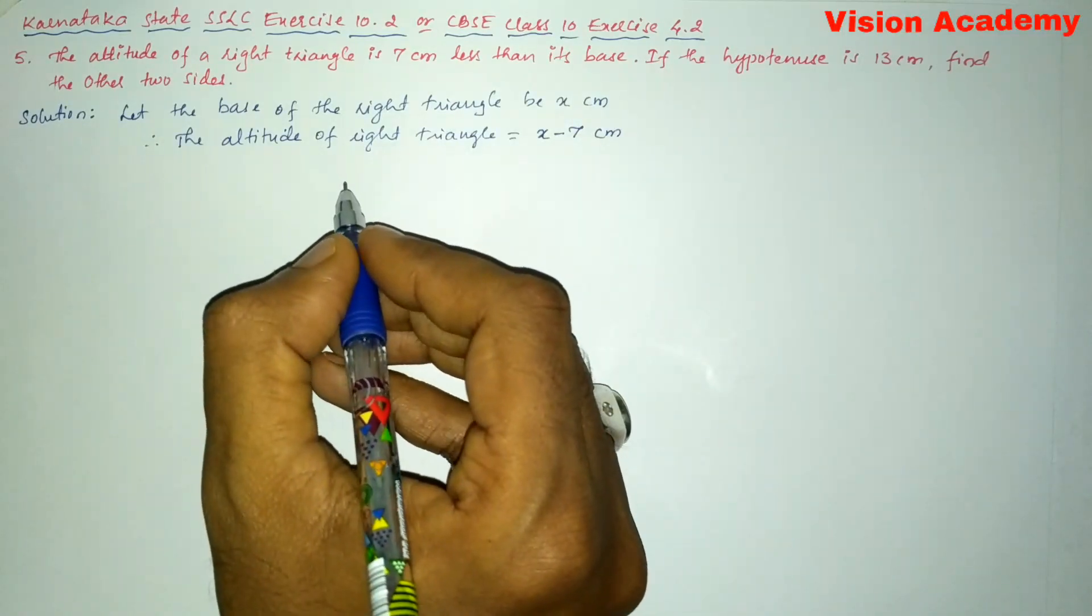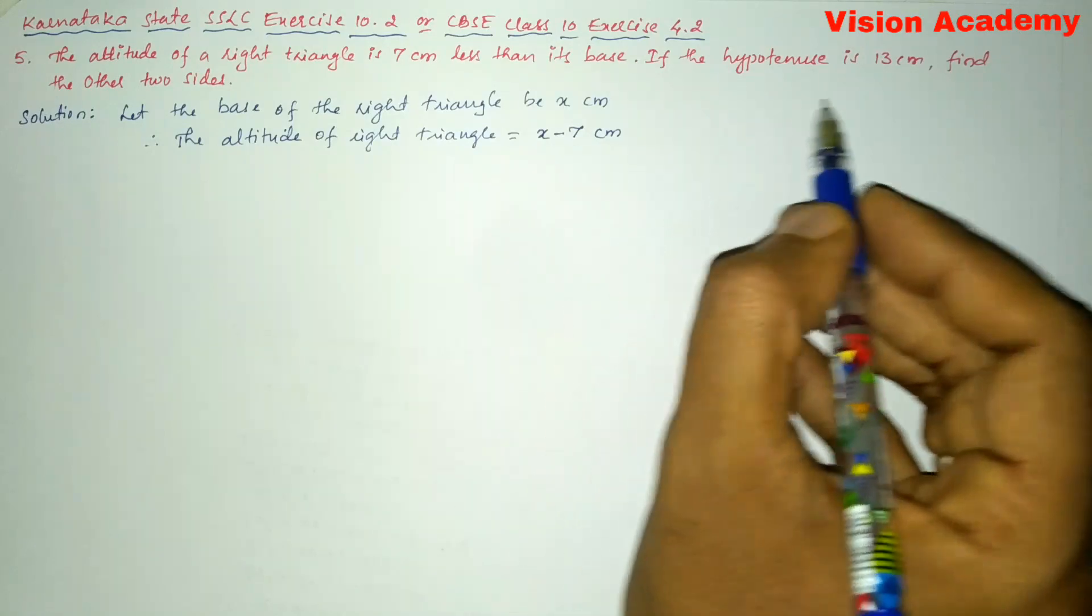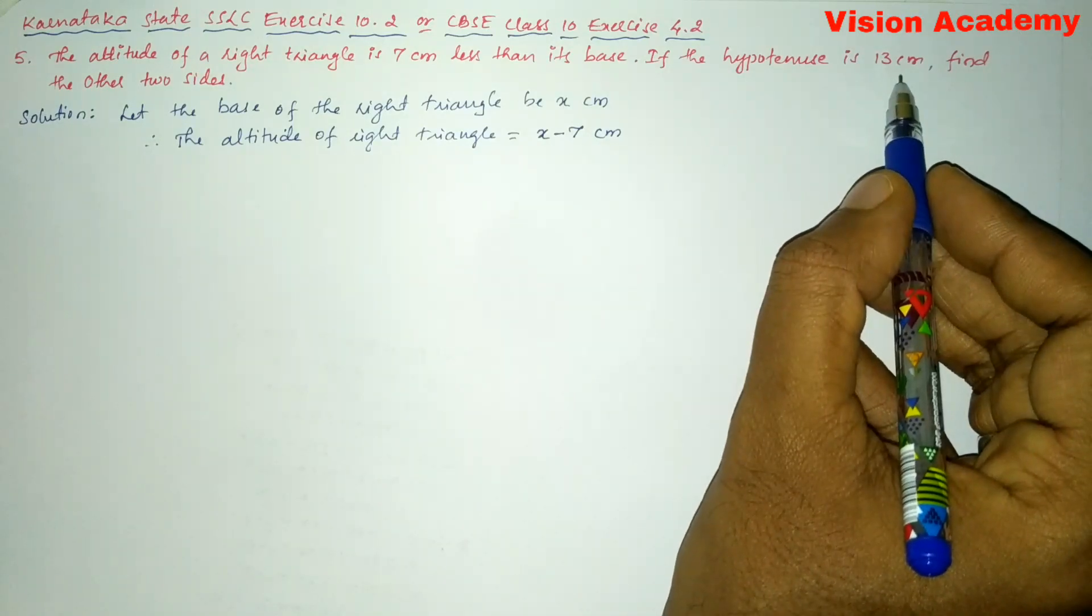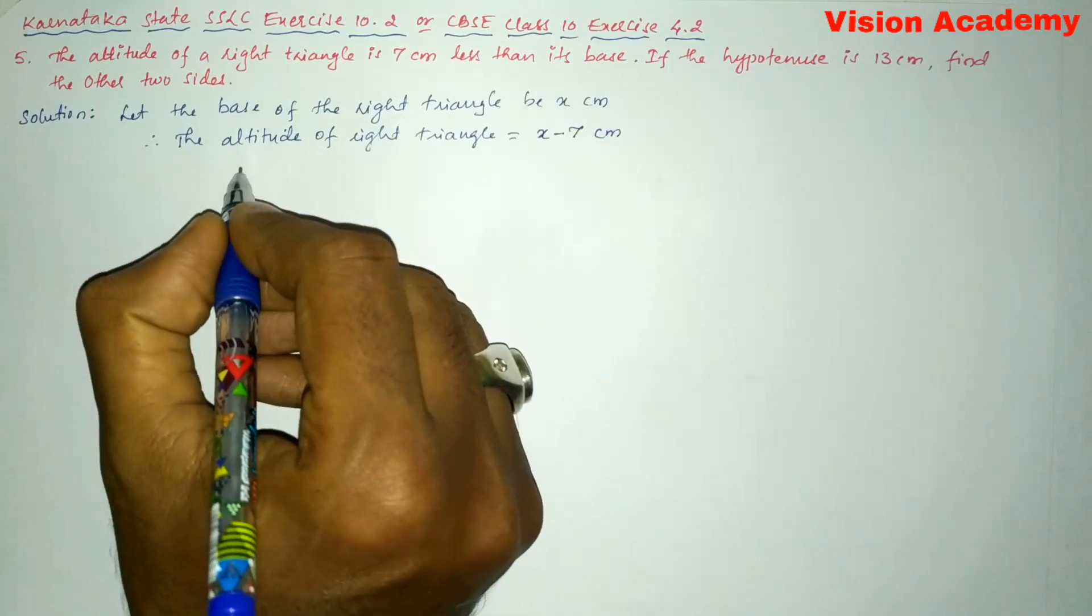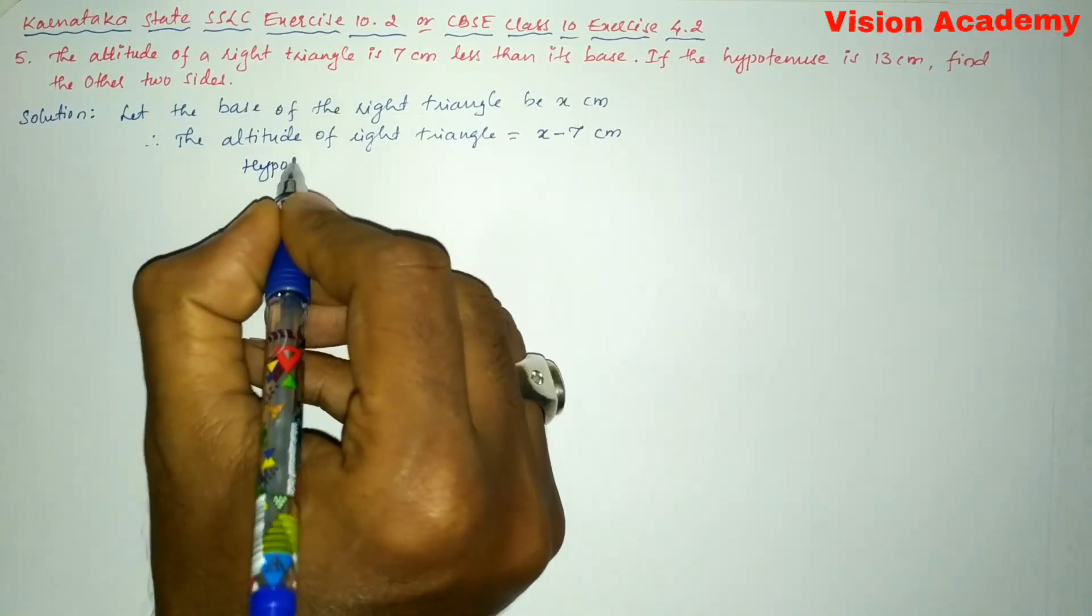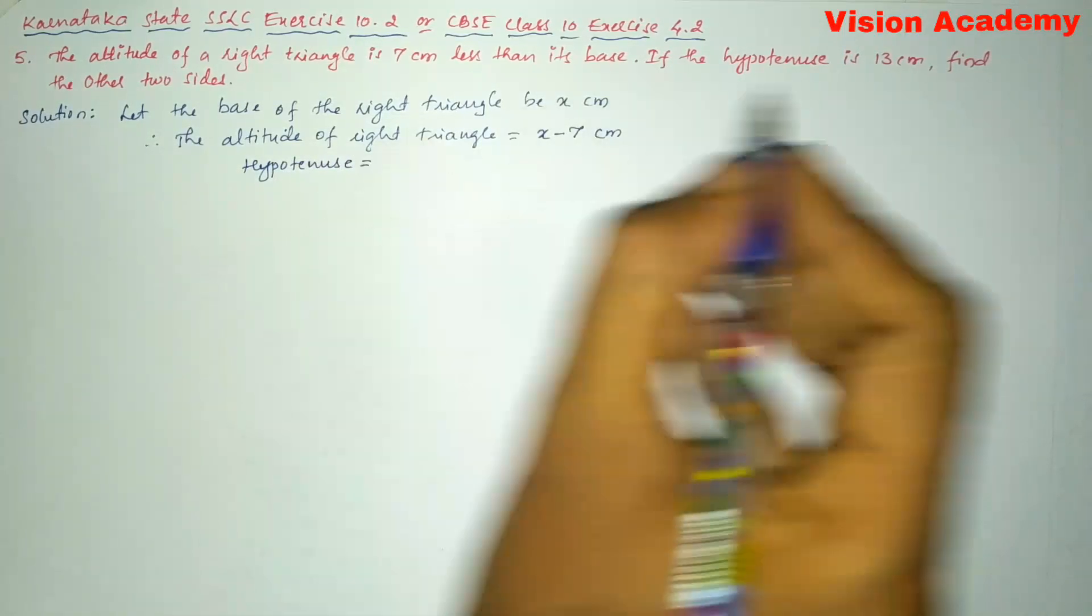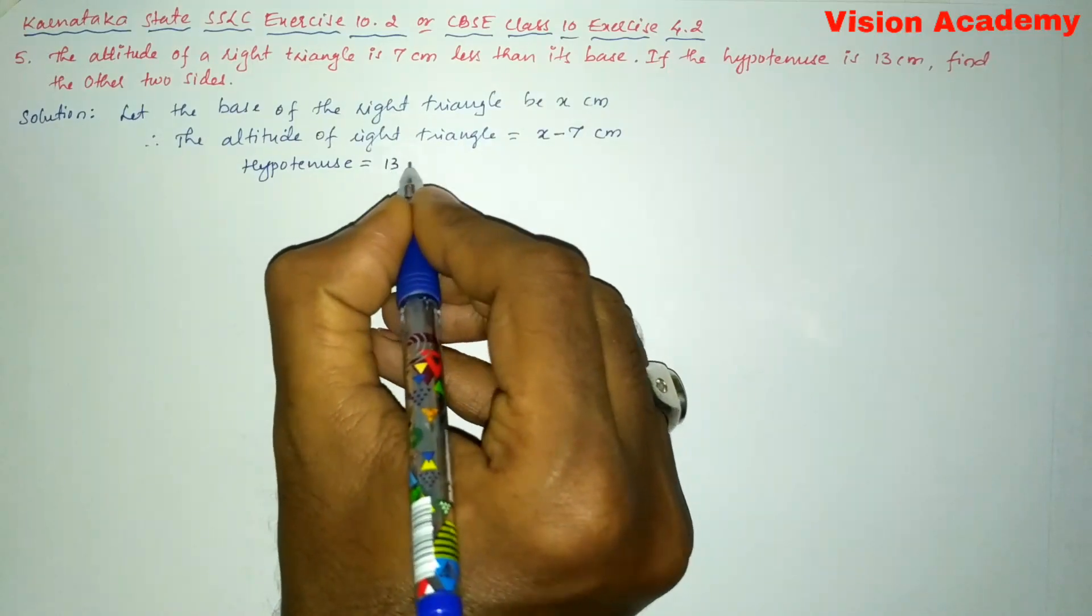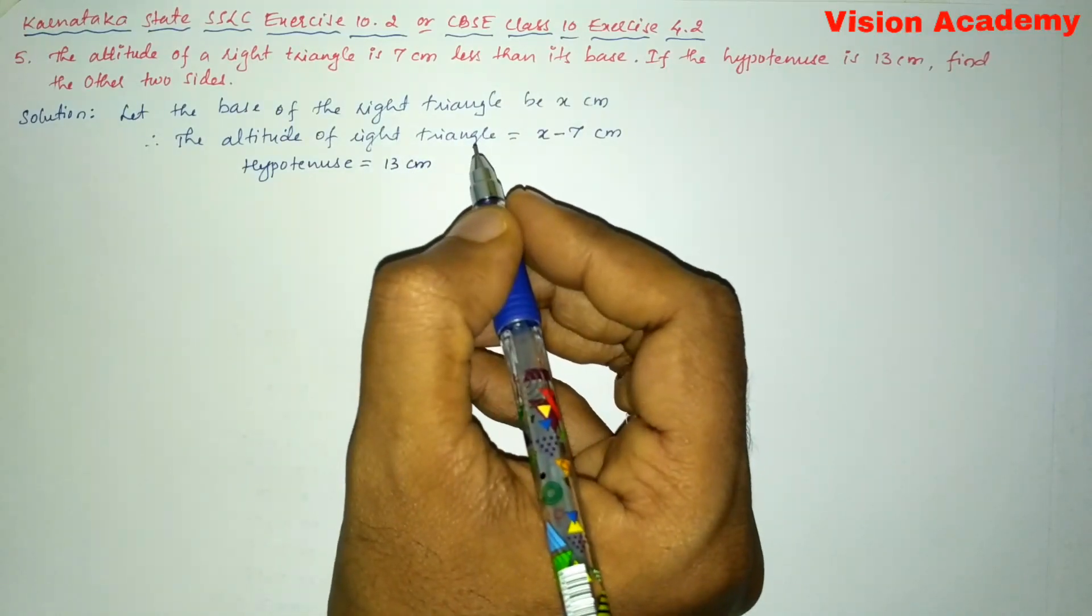Here we will write hypotenuse of the right angle triangle, they have given already 13 cm. Now we will write here hypotenuse is equal to 13 cm which is given in the question.